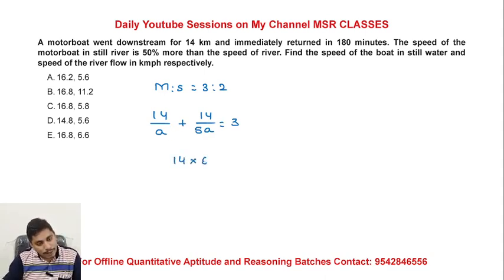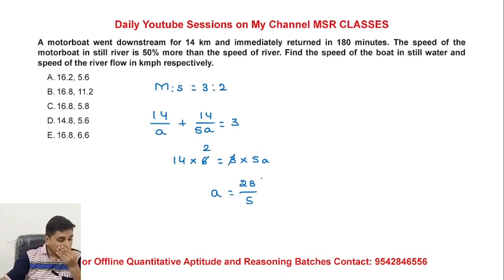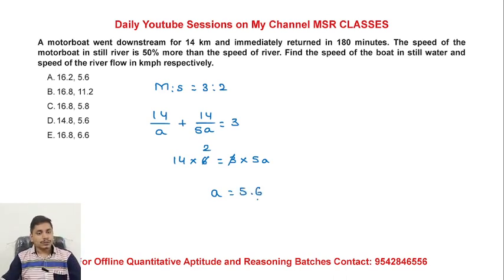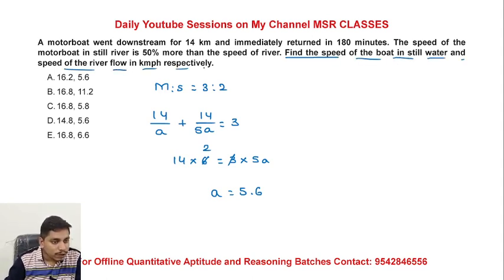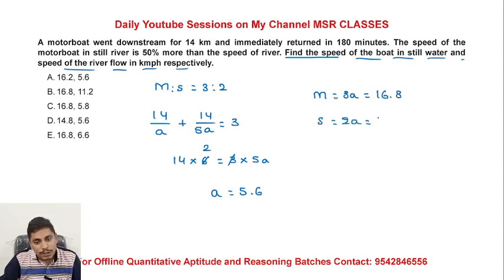14 into 6 equals 3 into 5A. So A value is 5.6. M value is 3A = 15 plus 1.8 = 16.8. S value is 2A = 10 plus 1.2 = 11.2. Speed of motorboat in still water is 16.8 and speed of current is 11.2.